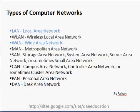PAN is a very small network used for personal work. DAN is a desk area network — a very small network within a desk, within a very small area.